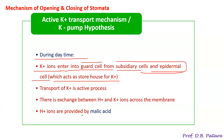During nighttime when stomata are closed, potassium ions are stored in the subsidiary cells and epidermal cells. But when stomata open in daytime, potassium ions are moved from those storage cells into the guard cells. This is an active process, not passive — it is not according to concentration gradient.